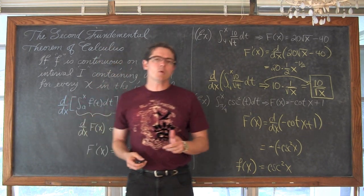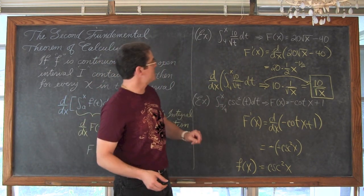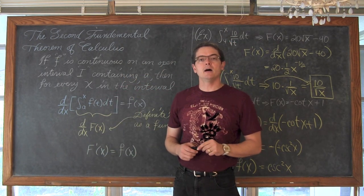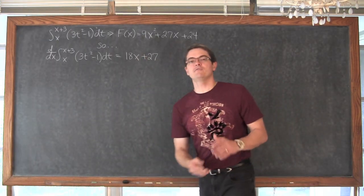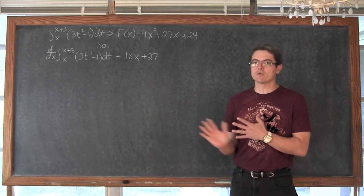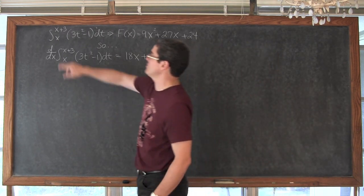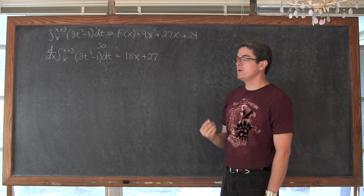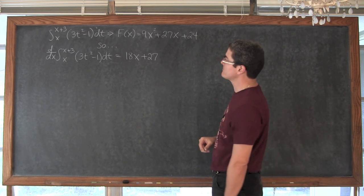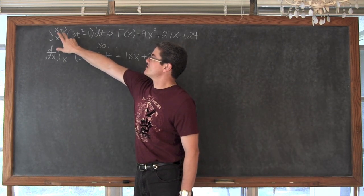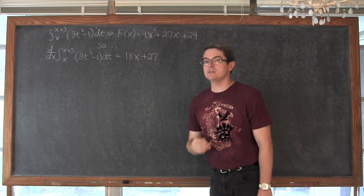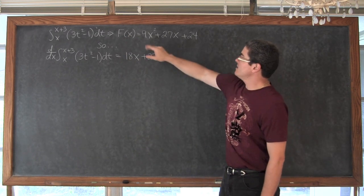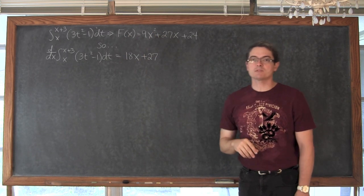Now things get a little bit trickier when your lower bound is not a constant and your upper bound is not just a basic x. So let's look at our last example. In this last example the use of the second fundamental theorem of calculus is not as straightforward. The definite integral of 3t squared minus 1 dt from x to x plus 3 is equal to capital F of x, that anti-derivative in terms of x, which equals 9x squared plus 27x plus 24.